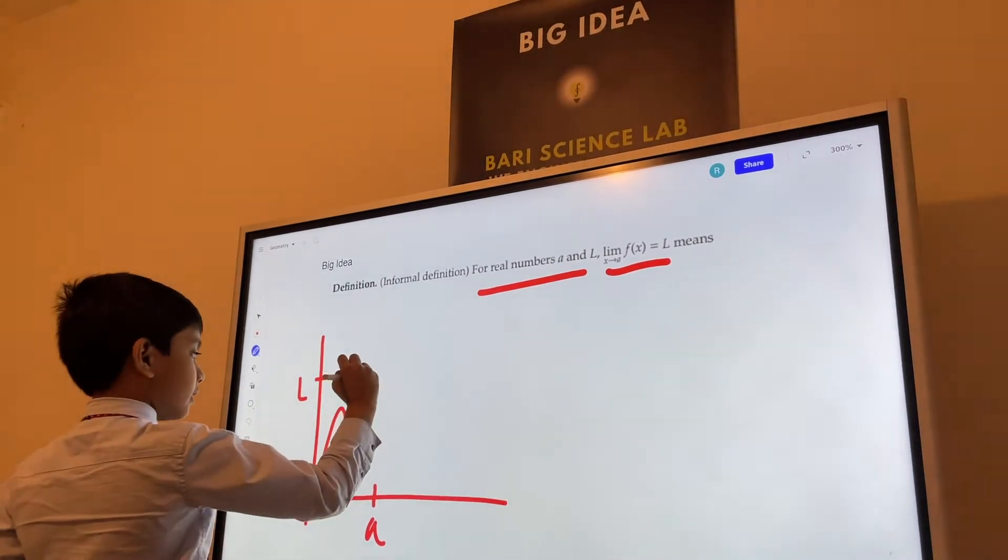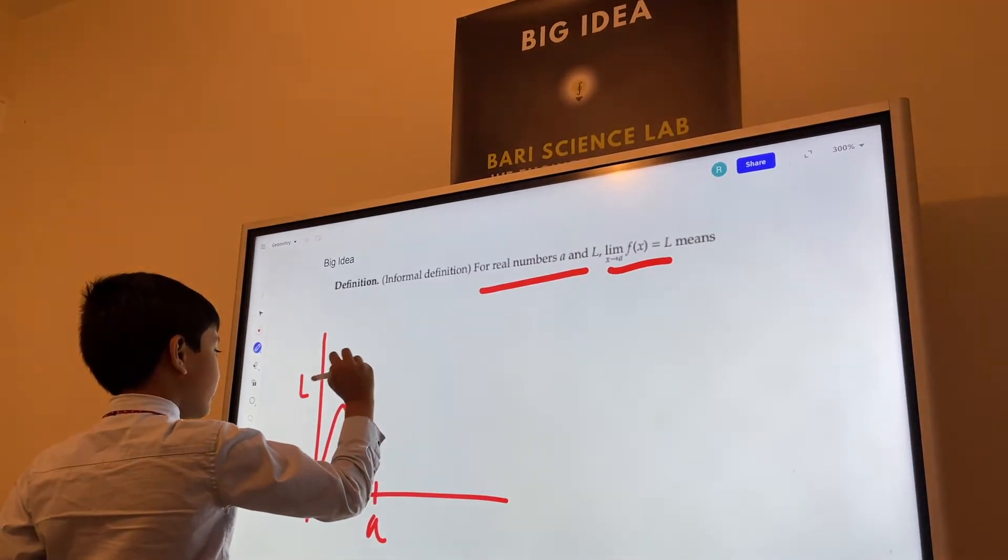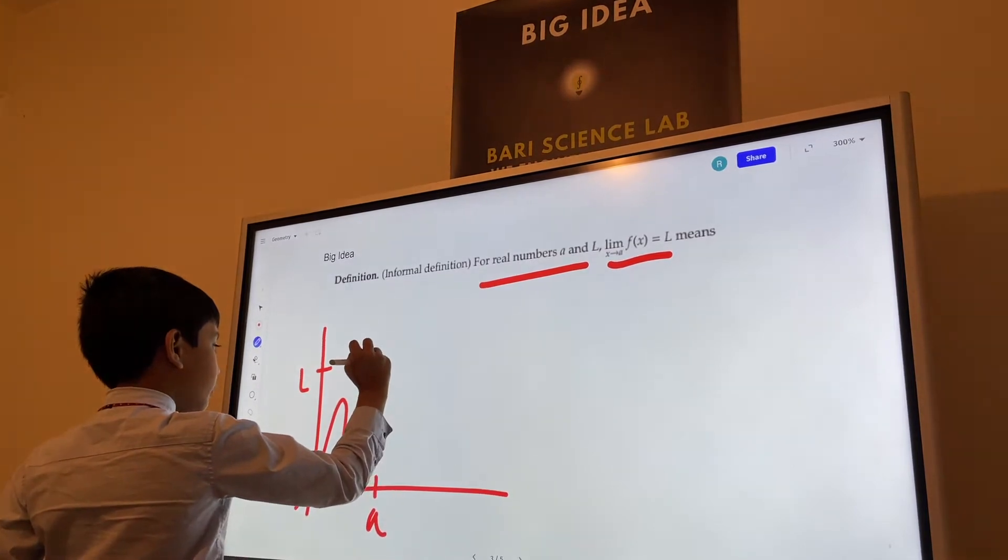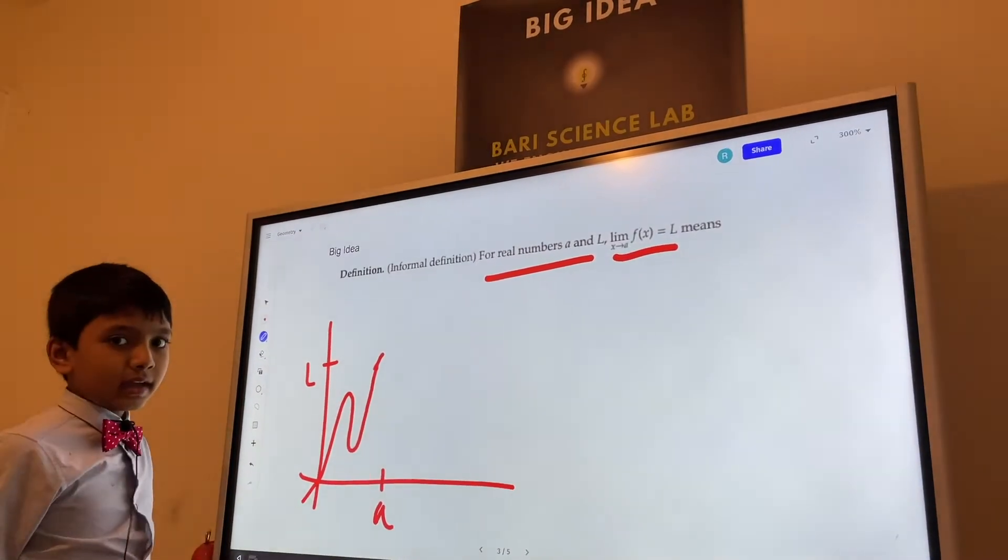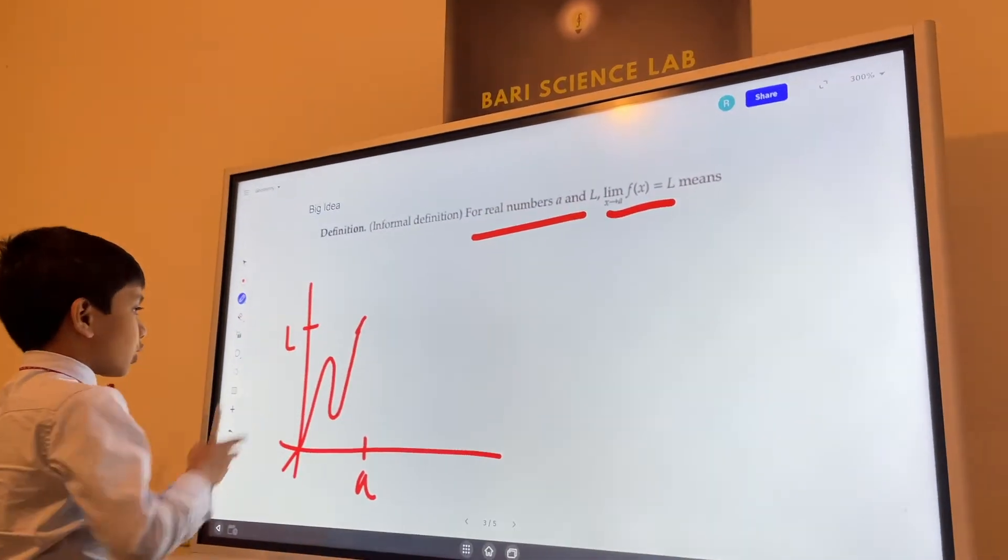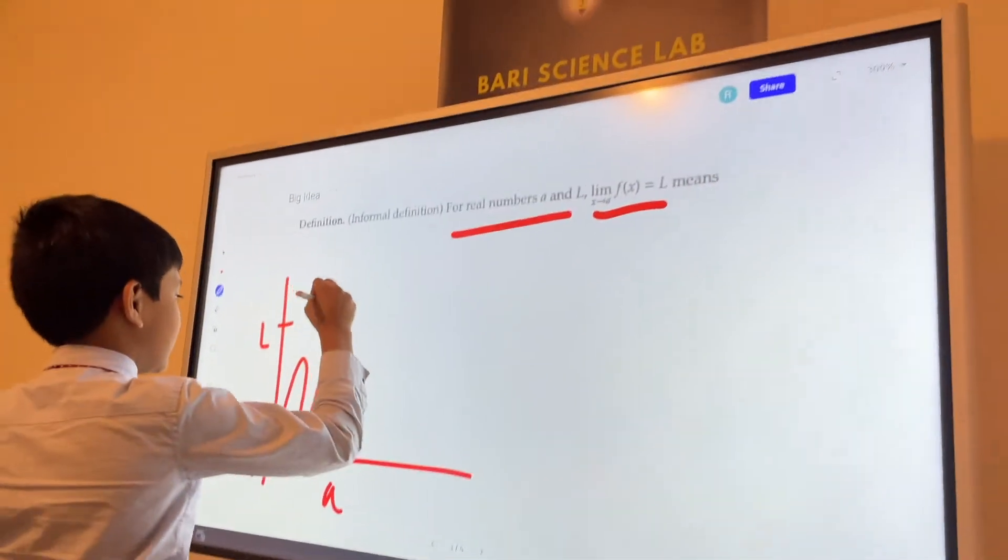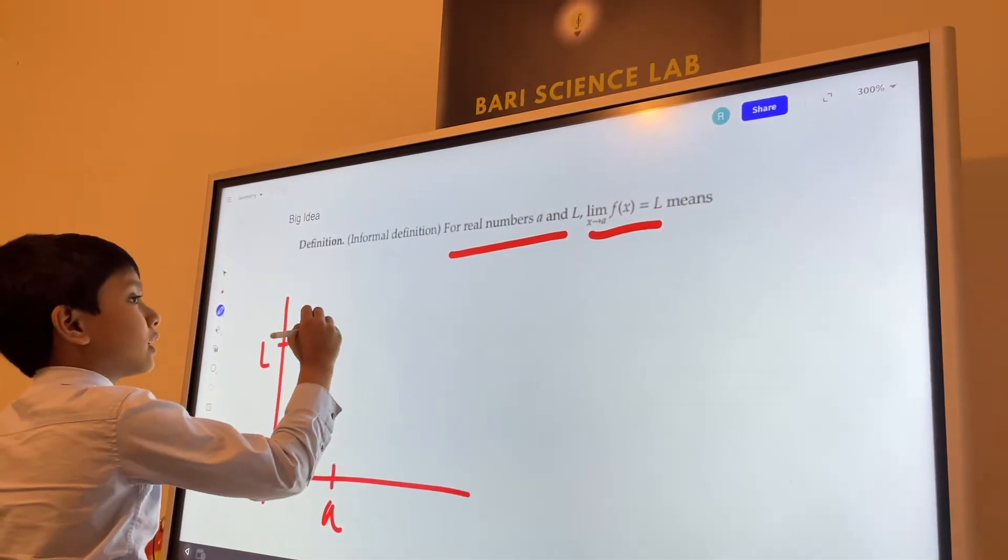and you see that it's getting arbitrarily closer, x gets arbitrarily closer to a, you know, y gets arbitrarily closer to l, or f of x gets arbitrarily closer to l.